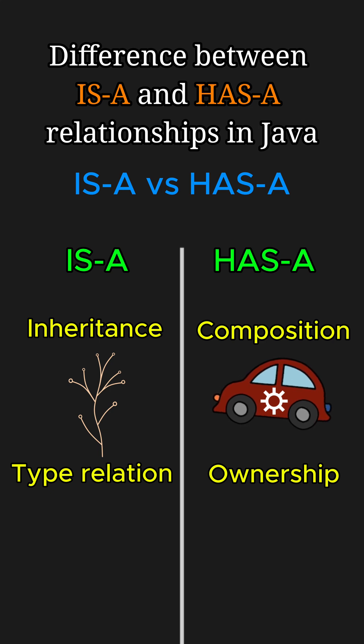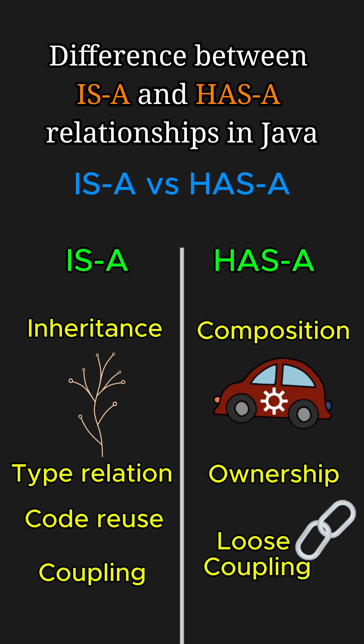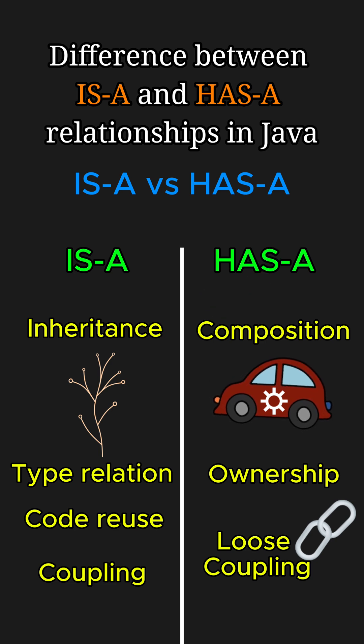Fun fact: did you know inheritance, or the is-a relationship, promotes code reuse, but it can tightly couple our classes? So a better approach in many cases is to favor composition over inheritance by using the has-a relationship. Composition allows greater flexibility because it keeps behavior decoupled and makes it easier to introduce changes or new functionality.